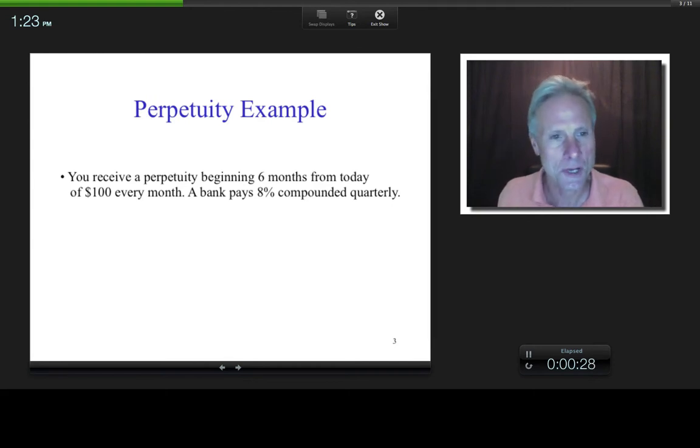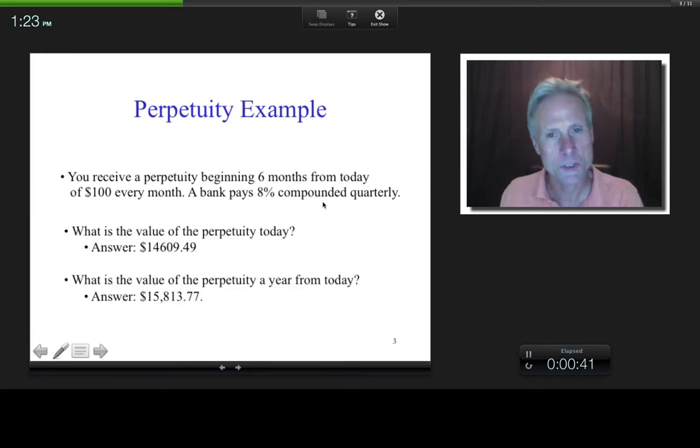So let's do an example problem. You receive a perpetuity beginning six months from today of $100 every month. A bank pays 8% compounded quarterly. Two questions: what is the value of the perpetuity today and what is it a year from today?